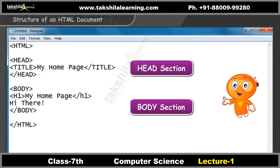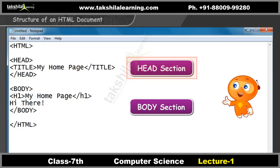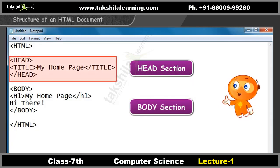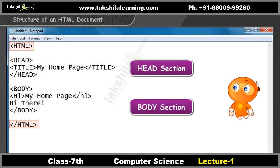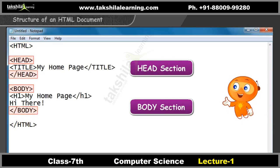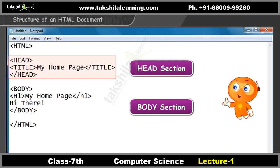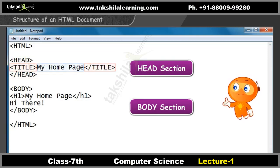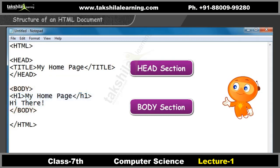An HTML document has two parts: the head and the body. The head section has the information or title of the document. The HTML element is a container element that specifies that the document is an HTML one for the browser. It has two elements — the head and the body element — which in turn can have other elements. The head element has identification and supplementary information that are generally not displayed. The title element has the title of the document that you see in the browser. The body element has all the contents that have to come in the document.